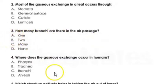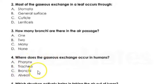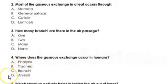Where does gaseous exchange occur in humans? The pharynx, trachea, and bronchi are air passageways, but gaseous exchange does not occur in the air passageways. The actual gaseous exchange occurs elsewhere.